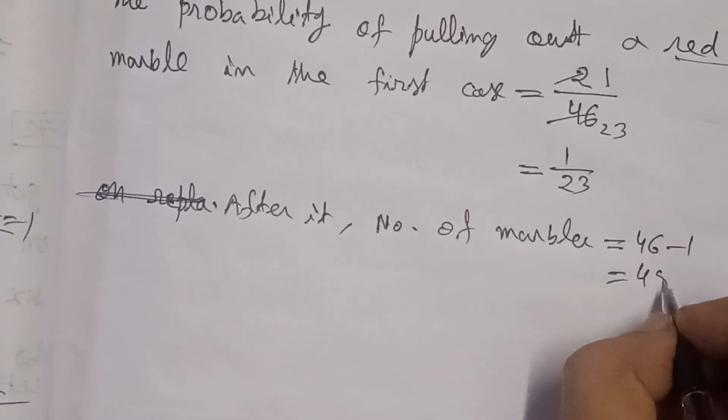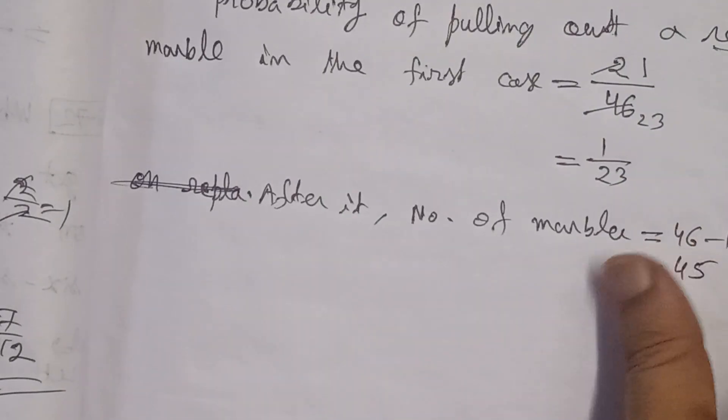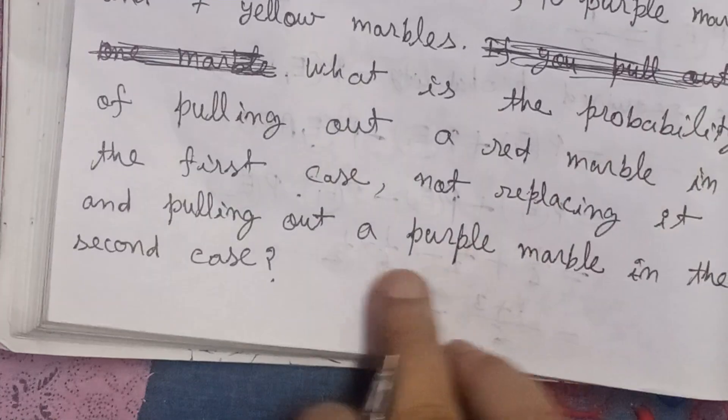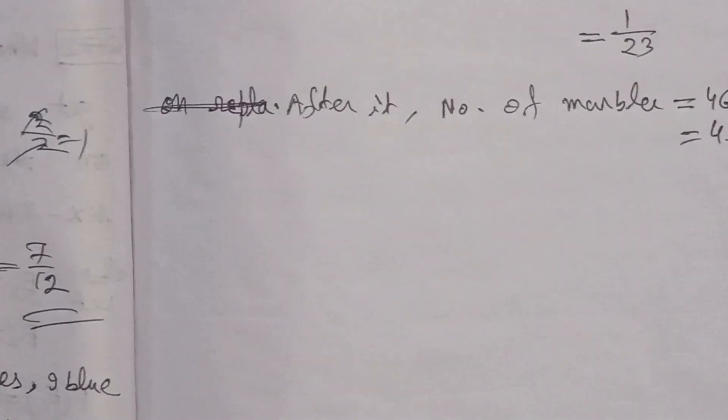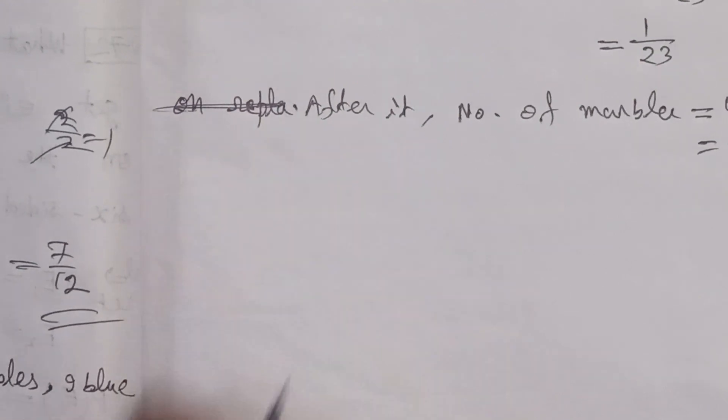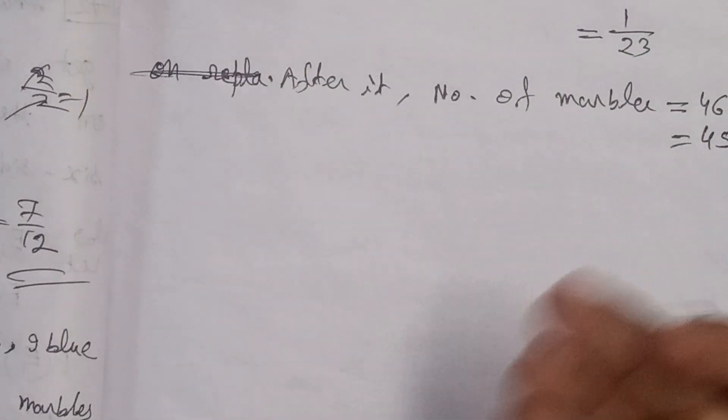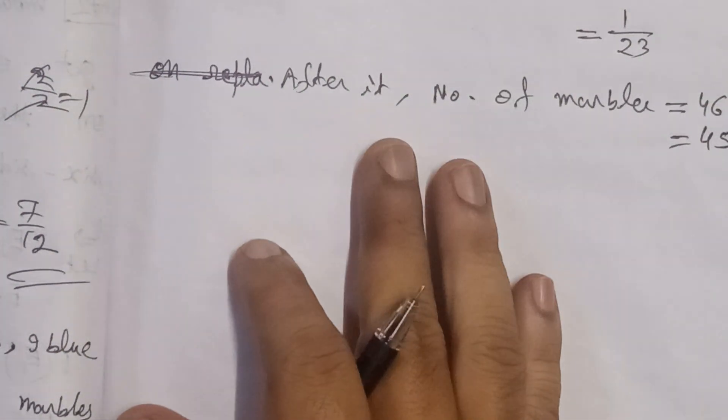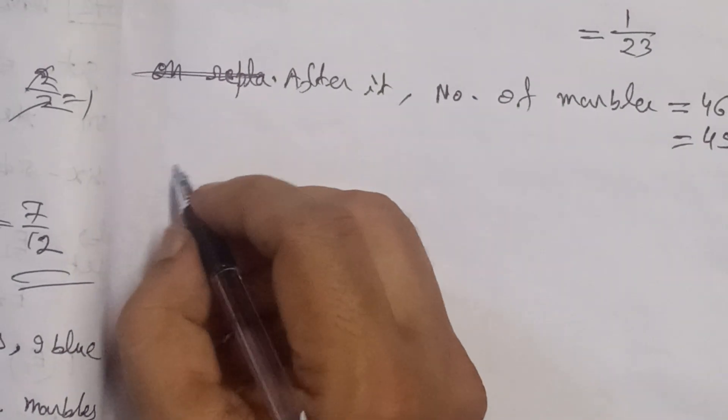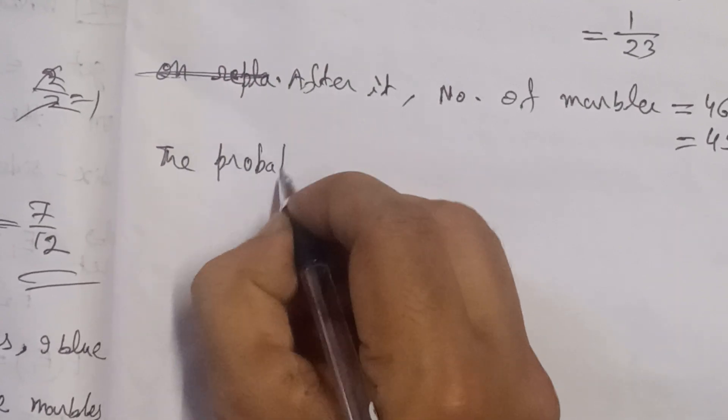From these 45, we will draw one purple marble. We need to find the probability of drawing a purple marble. Now we'll write the probability of pulling out a purple marble in the second case.